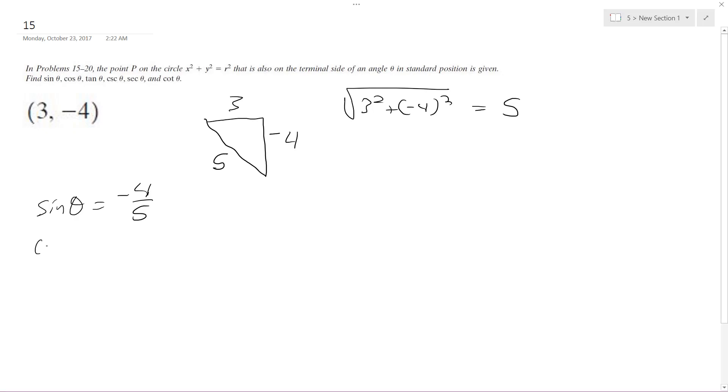Next, we've got the cosine of theta, which is going to be equal to 3 over 5, and then tangent of theta, which is going to be y over x, which is negative 4 over 3.